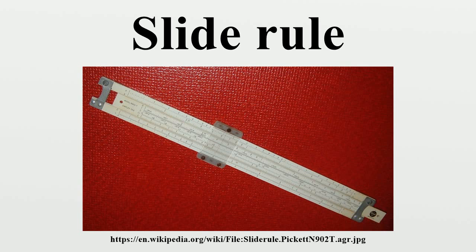Most students learned slide rule use on linear slide rules and did not find reason to switch. One slide rule remaining in daily use around the world is the E6B, a circular slide rule first created in the 1930s for aircraft pilots to help with dead reckoning. With the aid of scales printed on the frame it also helps with tasks such as converting time, distance, speed, and temperature values, compass errors, and calculating fuel use. While GPS has reduced the use of dead reckoning for aerial navigation and handheld calculators have taken over many of its functions, the E6B remains widely used as a primary or backup device, and the majority of flight schools demand that their students have some degree of proficiency in its use.